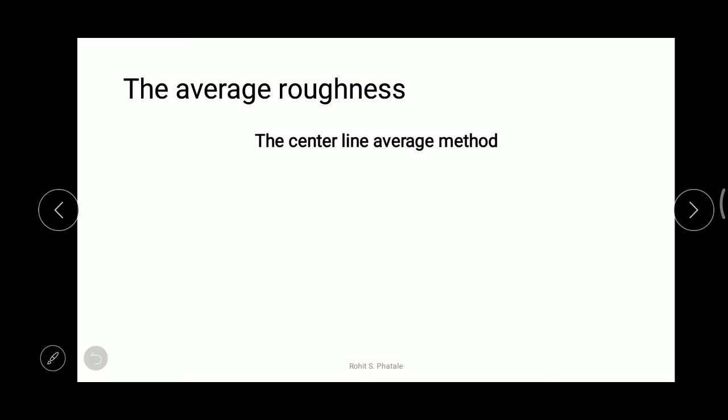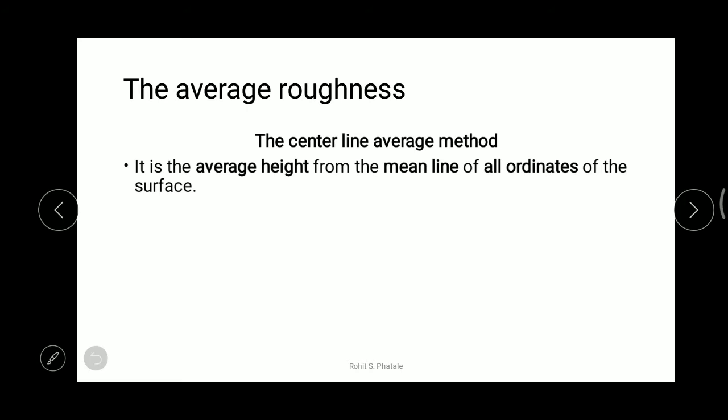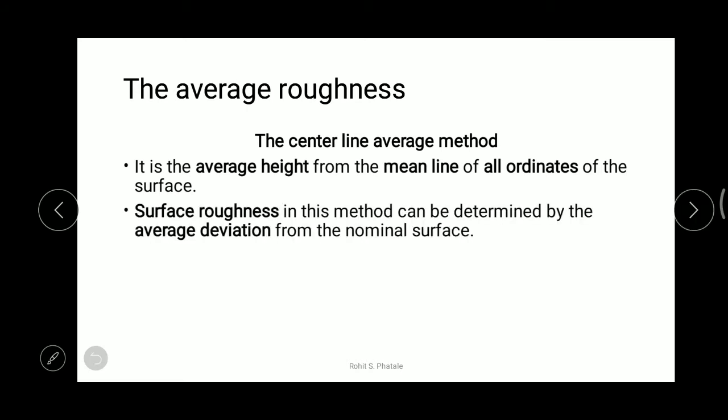First we will discuss the centerline average method. It is the average height from the mean line of all the ordinates of the surface. The surface roughness in this method can be determined by the average deviation from the nominal surface. Its value is given by a formula. This method is also known as the arithmetic average method.